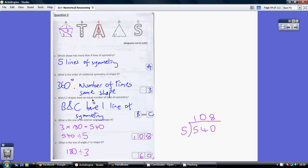Which two shapes have an equal number of lines of symmetry? Well both B and C only have one line of symmetry so it's B and C.